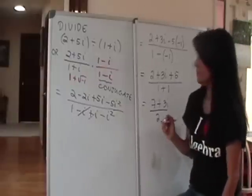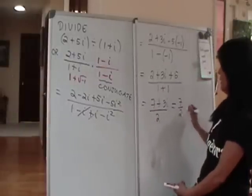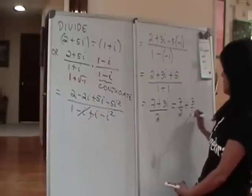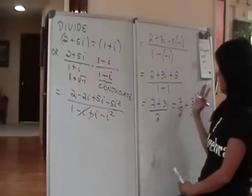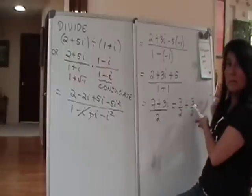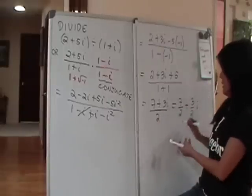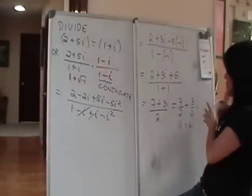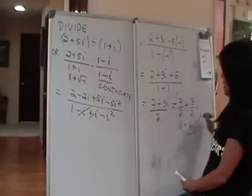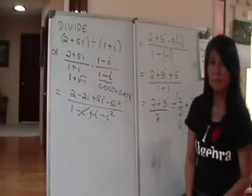That's the answer. But probably if you go to the back of the book, you'll see me write my answer as 7 halves plus 3 halves i. In other words, what I want to do is to split the real part from the imaginary part. This is how you usually will see your answers in the back. It has to be in the form A plus Bi - real part plus imaginary part i. So that's how you do your division of complex numbers.